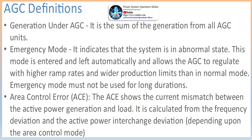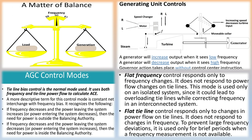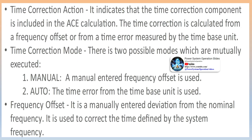AGC operating functions: if the ACE moves outside a predetermined limit, the AGC will suspend and go to monitor mode and no longer send control outputs to the AGC generators. The generation dispatcher must then control the system manually by contacting power plants to adjust the generation within control limits. Power plant and generation dispatcher interaction: the power plant operator must have units available for AGC control. The power plant operator will place the units available for AGC on remote control by a control switch located in the power plant control room. Each AGC unit will have a control switch which can be selected for local or remote control.